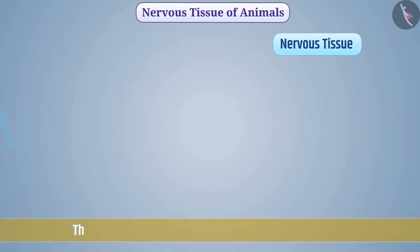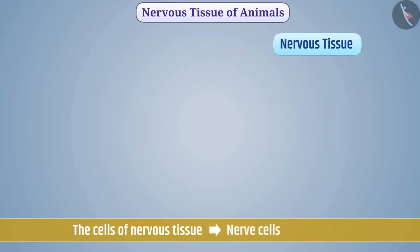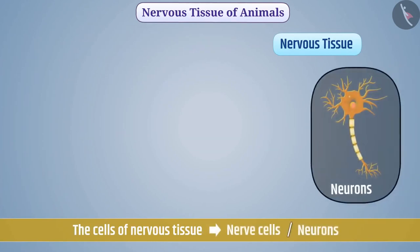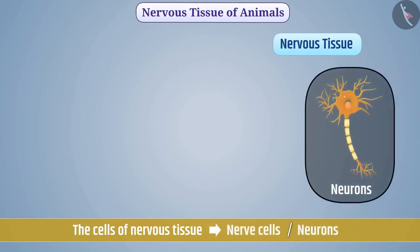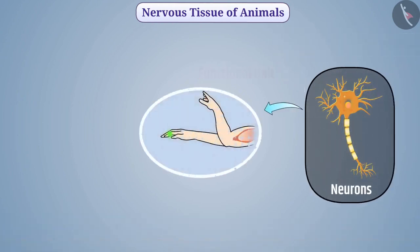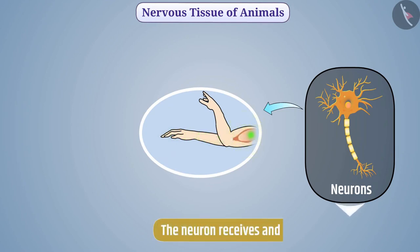The cells of the nervous tissue are called nerve cells, that is, neurons. Neuron is the functional unit of nervous tissue. The neuron stimulates very quickly and transmits stimulus very quickly from one place to another — that is, the neuron receives and conducts different stimuli.